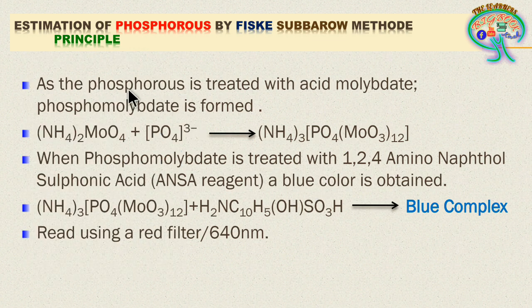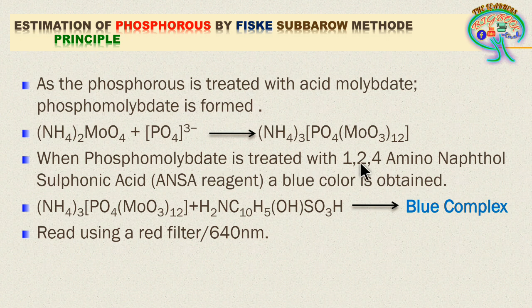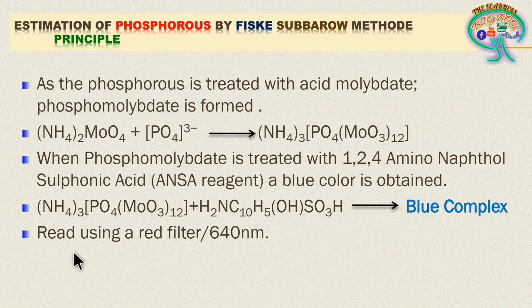The principle of the method is as follows: the phosphate compound is treated with acid molybdate, which gives phosphomolybdate. This phosphomolybdate is then treated with ANSA reagent, giving a blue color complex. After getting the blue complex, we read it using a red filter at 640 nanometers.